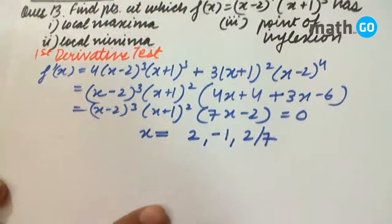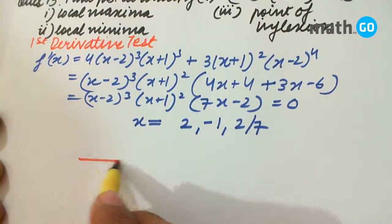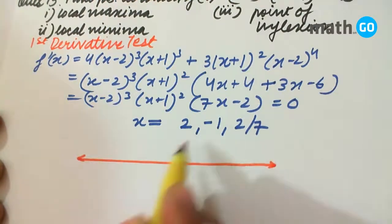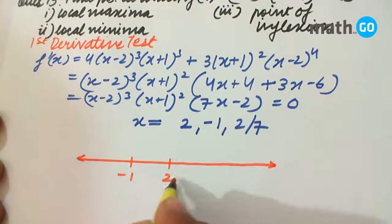What do we do? We make a number line, locate these points: -1, 2/7, and 2. Now what do we see?